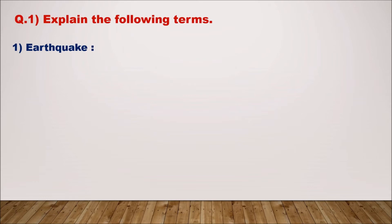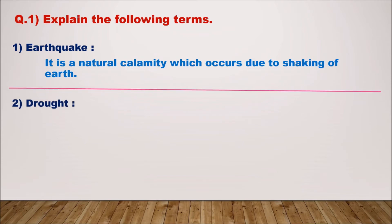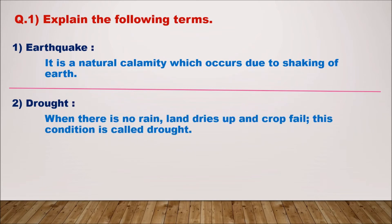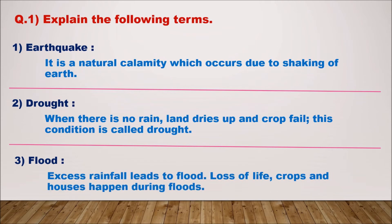Let us see questions from the identification section. Question one: explain the following terms. One — earthquake: it is a natural calamity which occurs due to shaking of the earth. Two — drought: when there is no rain, land dries up and crops fail; this condition is called drought.